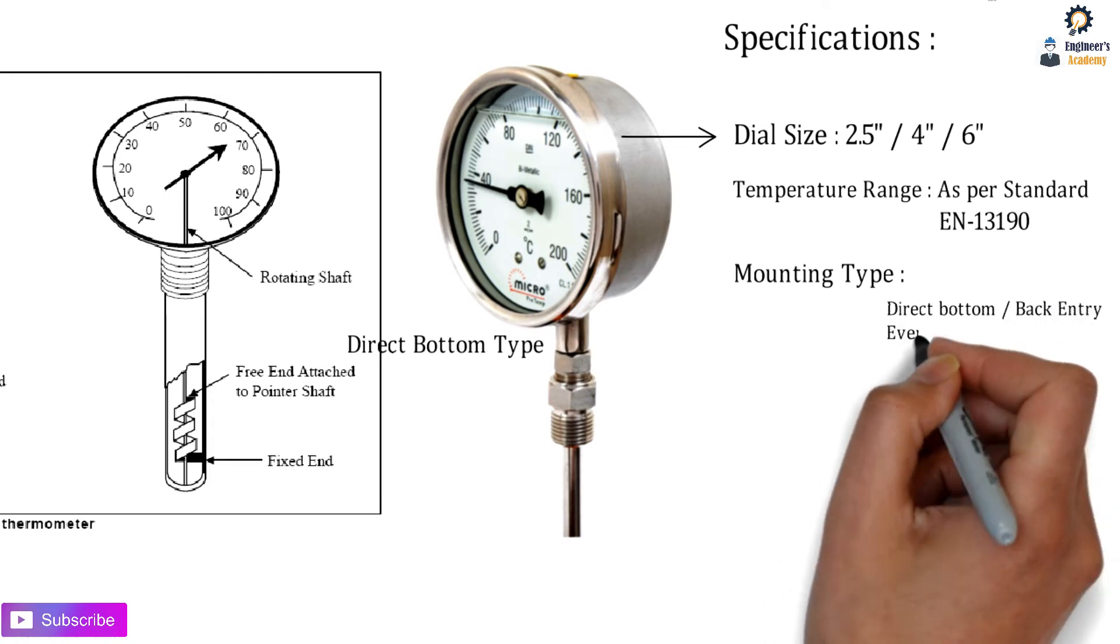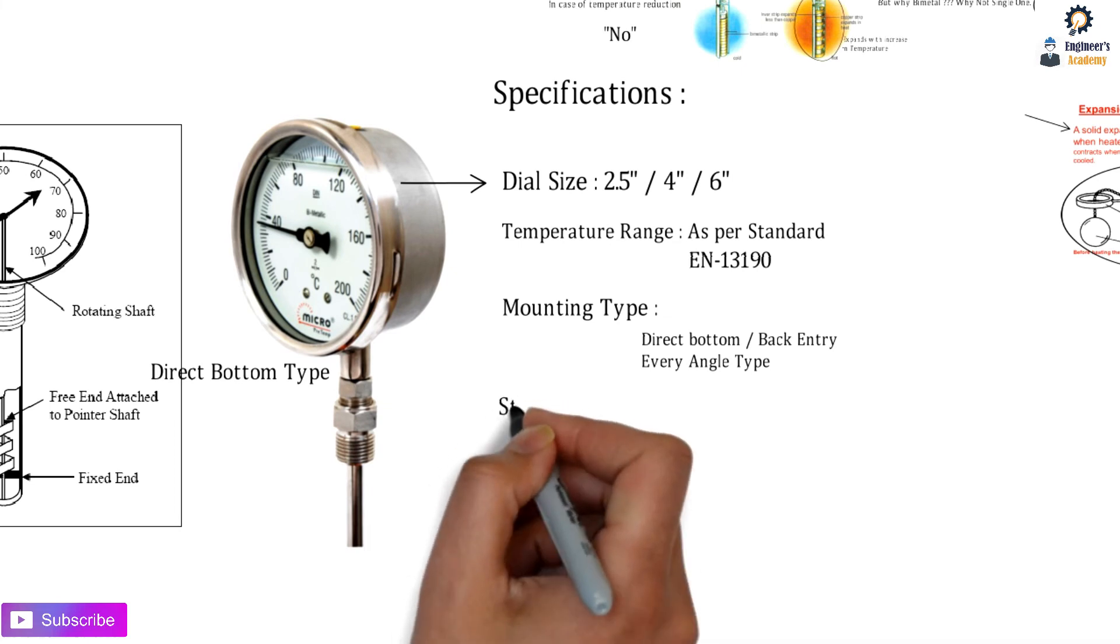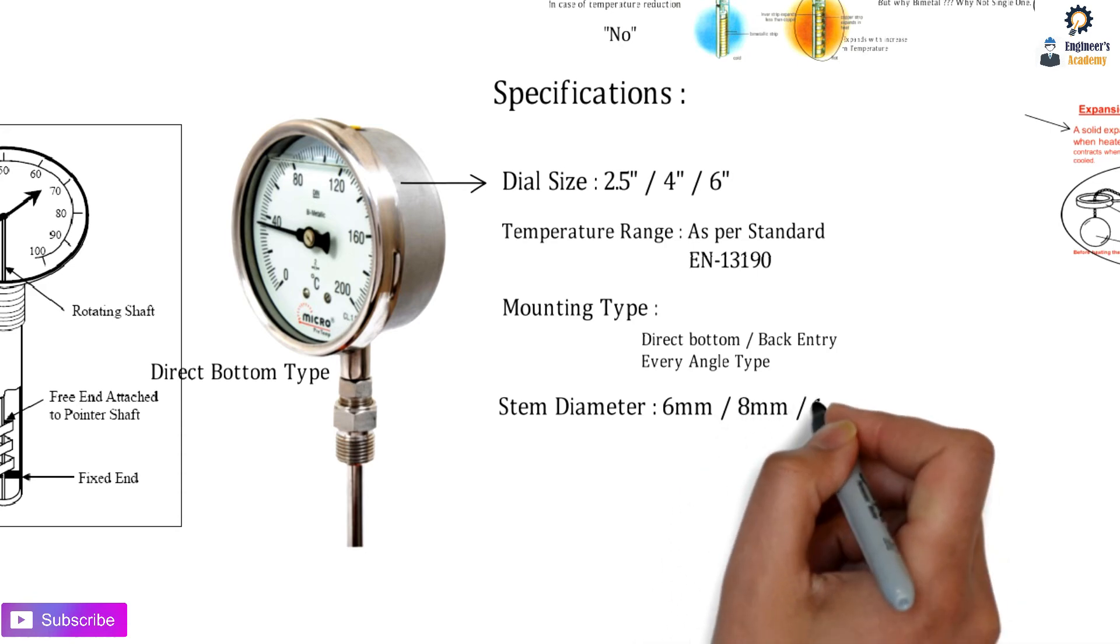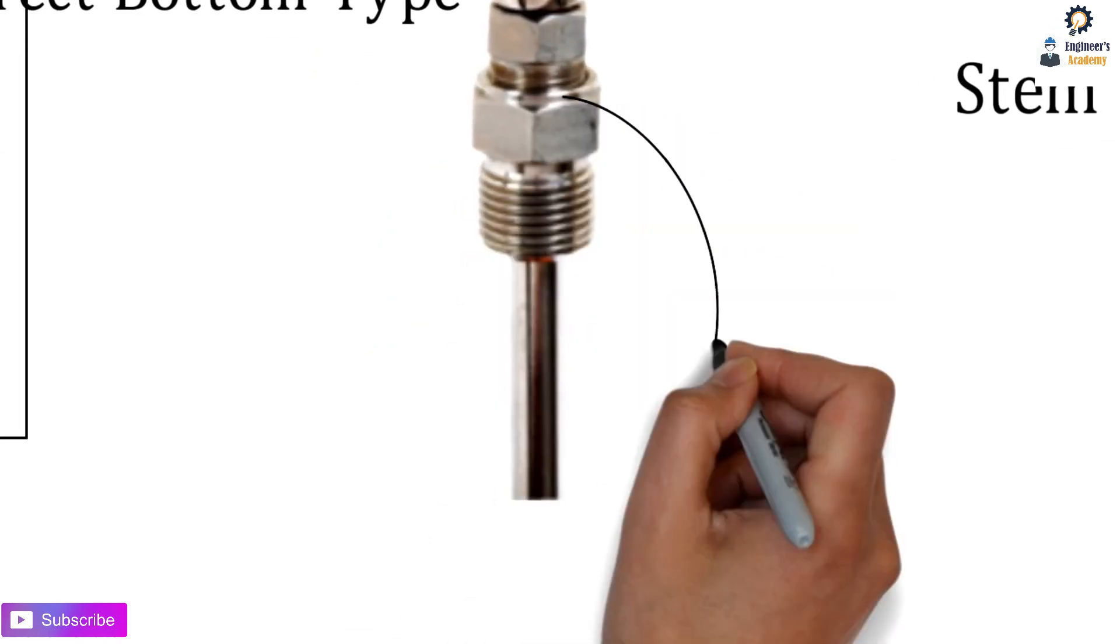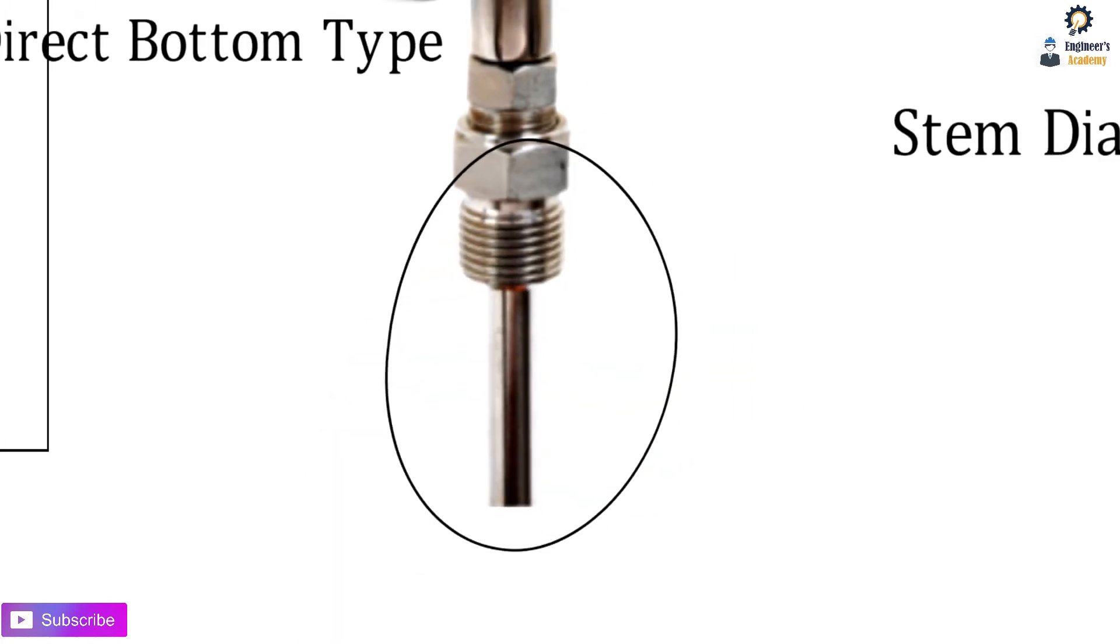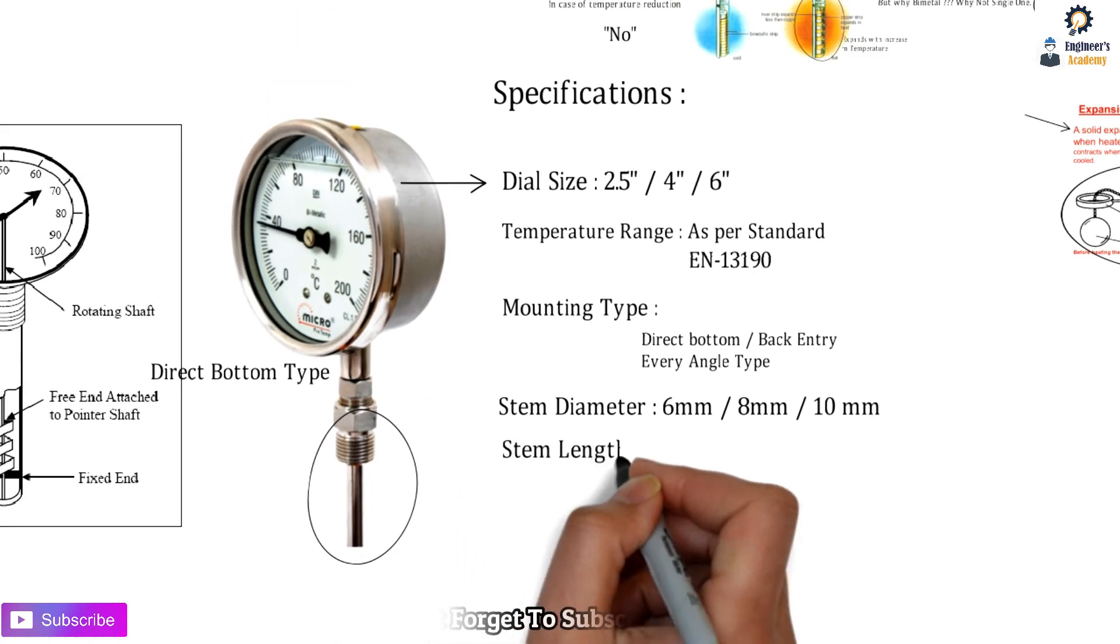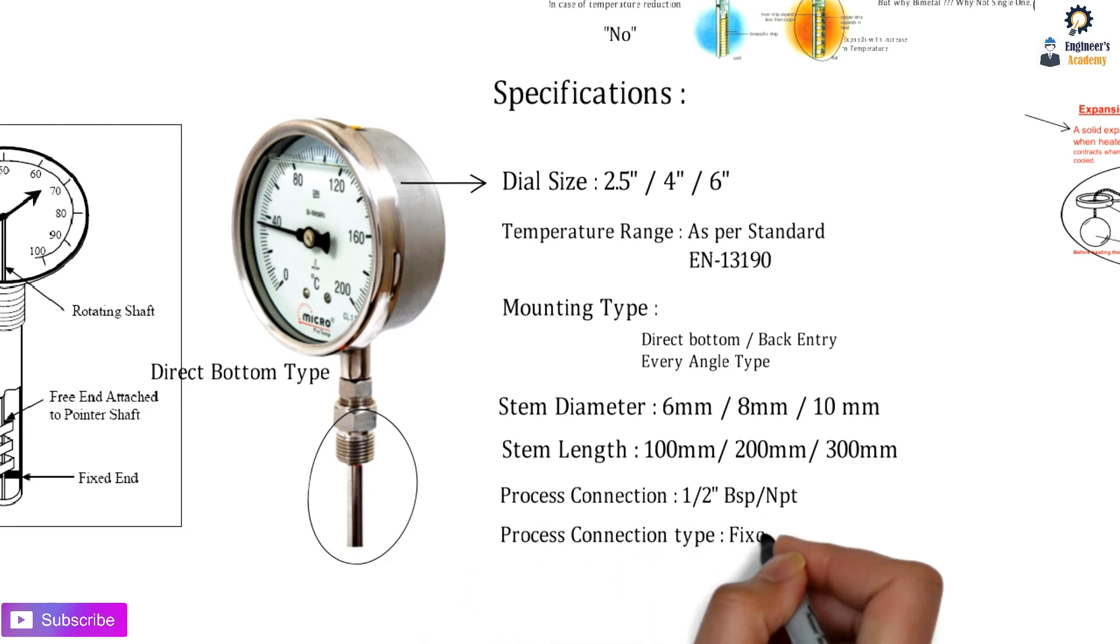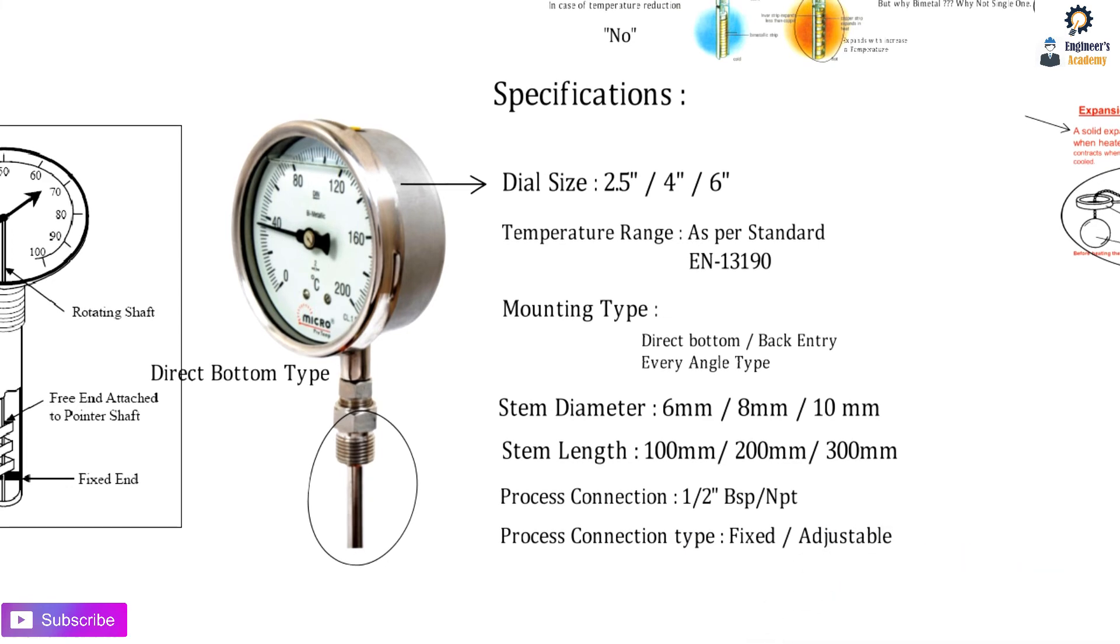Next is the stem diameter, which can vary from 6mm, 8mm, or 10mm. The stem length depends on customer requirement - 100mm, 200mm, or 300mm. The process connection determines how we fix this to the equipment - it can be half inch BSP or NPT, fixed or adjustable. These are all the specifications needed for a bimetallic temperature gauge.